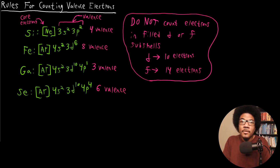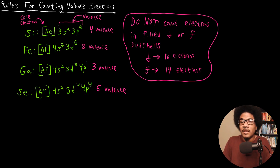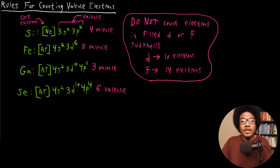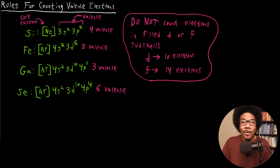Hopefully this clears up the counting of valence electrons and establishes how we determine them, so that any discussion on periodic trends will make more sense. Just remember this important rule: you don't count filled D or F electrons as valence electrons. If these shells are not filled you do count them, but if they're filled they're stable and won't really affect reactivity or bonding all that much.